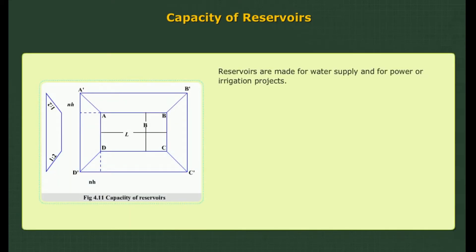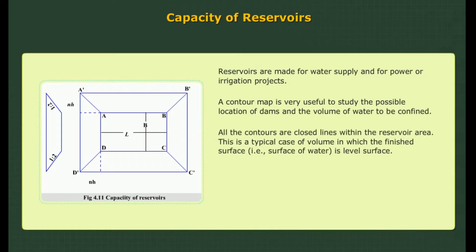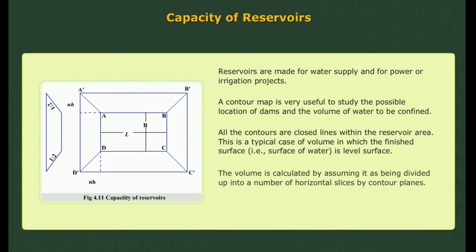Determination of capacity of reservoirs: Reservoirs are made for water supply and for power or irrigation projects. A contour map is very useful to study the possible location of dams and the volume of water to be confined. All the contours are closed lines within the reservoir area. This is a typical case of volume in which the finished surface, that is the surface of water, is a level surface. The volume is calculated by assuming it as being divided up into a number of horizontal slices by contour planes.